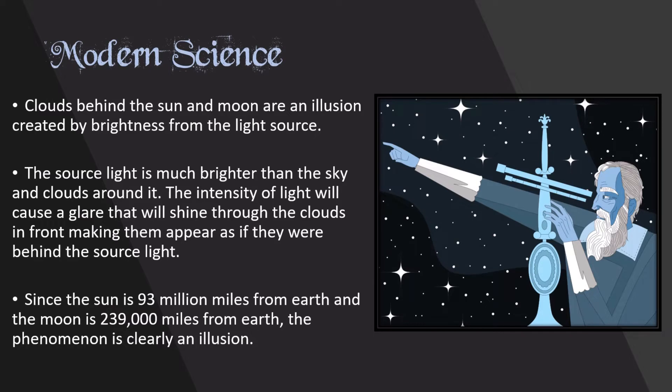According to modern science, clouds behind the sun and moon are an illusion created by brightness from the light source. The source light is much brighter than the sky and clouds around it. The intensity of light will cause a glare that will shine through the clouds in front, making them appear as if they were behind the source light.